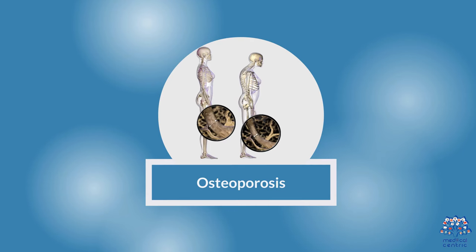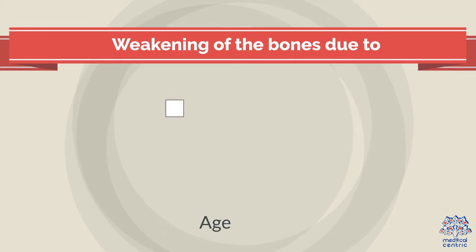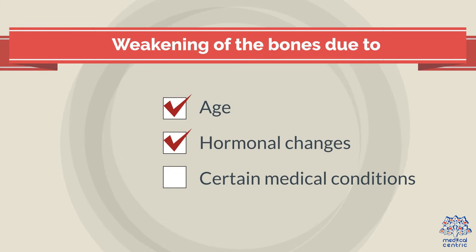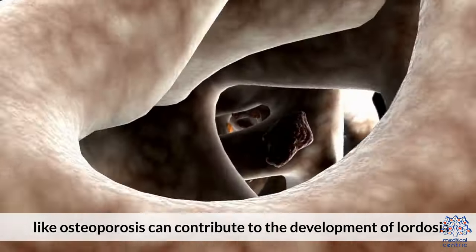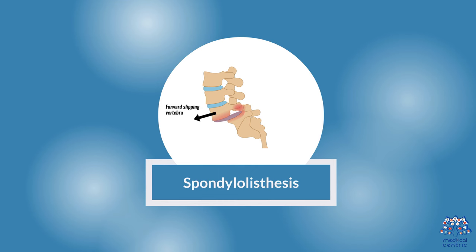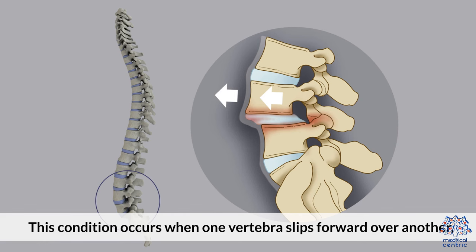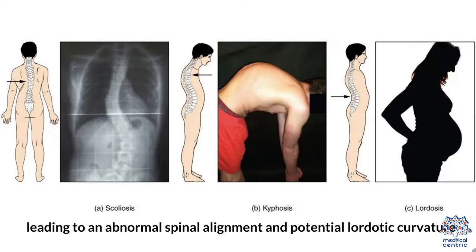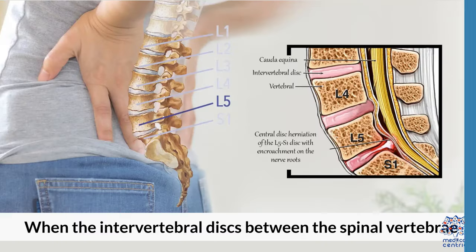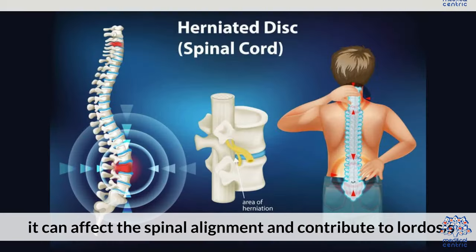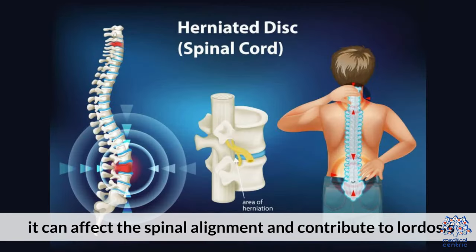2. Osteoporosis: Weakening of the bones due to age, hormonal changes, or certain medical conditions like osteoporosis can contribute to the development of lordosis. 3. Spondylolisthesis: This condition occurs when one vertebra slips forward over another, leading to an abnormal spinal alignment and potential lordotic curvature. 4. Disc Herniation: When the intervertebral discs between the spinal vertebrae become damaged or displaced, it can affect the spinal alignment and contribute to lordosis.